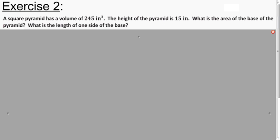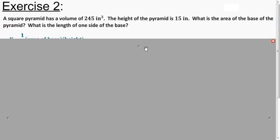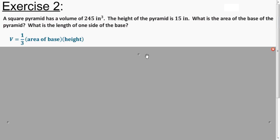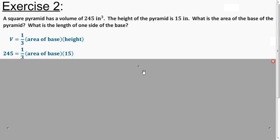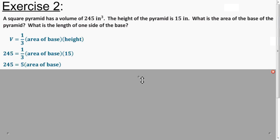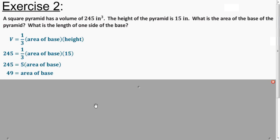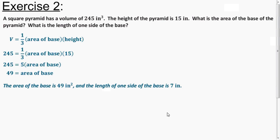Try Exercise 2, and then I'll show you my solution. In this case, we know the volume and have to figure out the area of the base and then the length of the side. We plug into the formula — you can call the area of the base X or capital B. When we solve, we get the area of the base is 49. Since it's a square pyramid, we take the square root of that, and the length of the side is 7 inches.